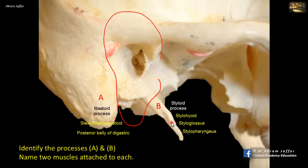Styloglossus goes to the tongue, stylopharyngeus to the pharynx, and stylohyoid to the hyoid. Stylohyoid accompanies the posterior belly of the digastric, which comes from the mastoid process. Both stylohyoid and posterior belly of digastric are supplied by the facial nerve. Styloglossus, as a muscle of the tongue, is supplied by the hypoglossal nerve. Stylopharyngeus is supplied by the glossopharyngeal nerve — it is the only muscle supplied by this nerve. So three muscles, each with a different nerve supply.